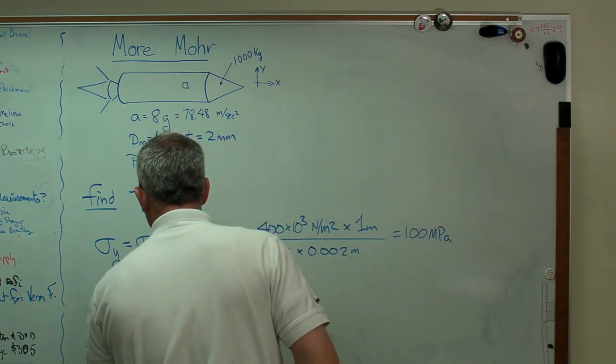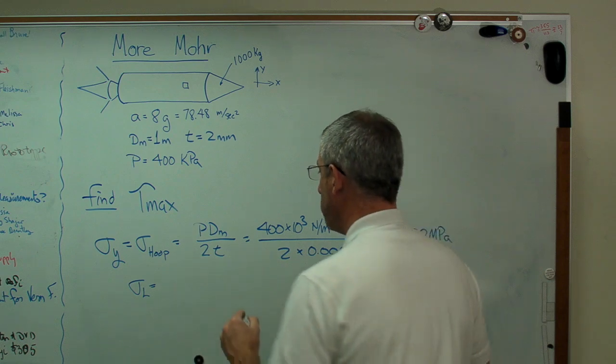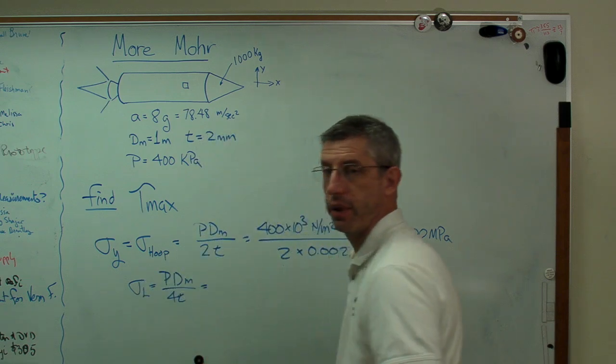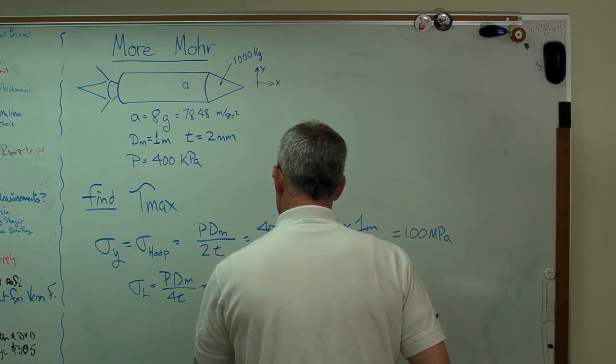Now, let's take a look at longitudinal stress. That's going to be just half the hoop stress, because longitudinal stress is Pdm over 4t. So, it's just half of that, and that works out to be 50 megapascals.